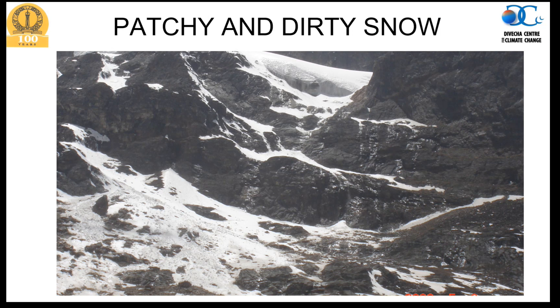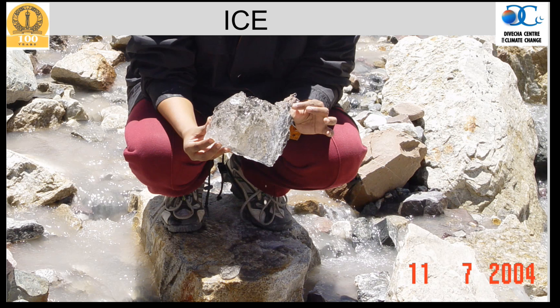The color of snow changes significantly as it goes through various processes. Once it falls onto the ground, it changes its liquid water content, density, grain size, and reduces its thickness through melting. It becomes patchy and dirty snow, and contaminants present in the snowpack get filtered out and come to the surface. This dirty snow has a slightly lower albedo than fresh snow.